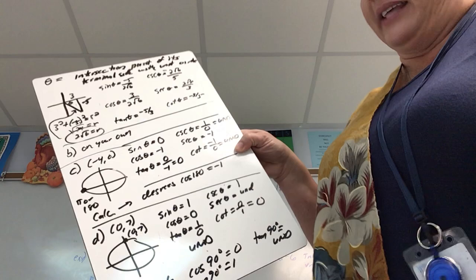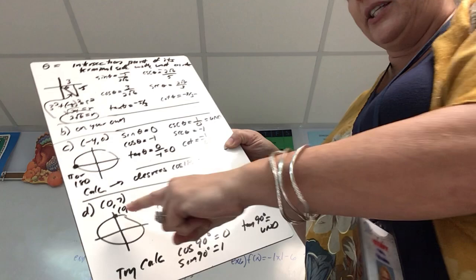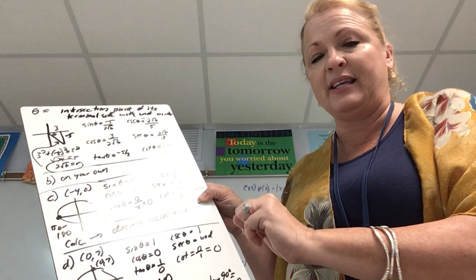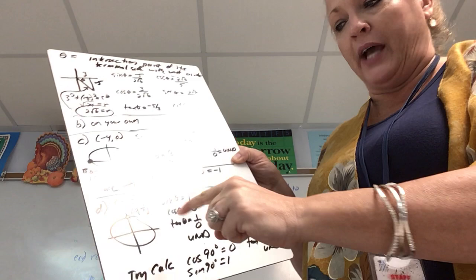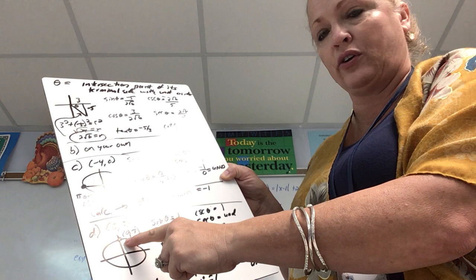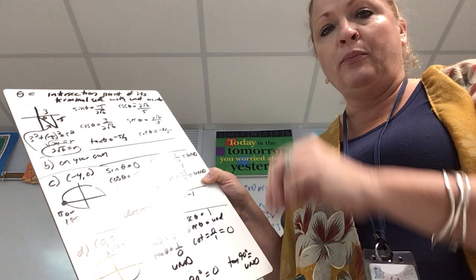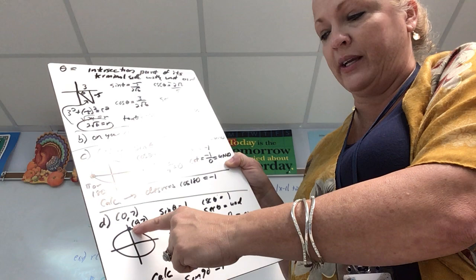For part d, set up six trig ratios where theta intersects the unit circle at (0, 7). Graph it to visualize: cosine is the x-coordinate (horizontal distance) and sine is the y-coordinate (vertical distance). Even though the point shows 7, this is a unit circle. Whether the point is (0, 7) or (0, 500), the sine of theta is 1, because the unit circle's top point is (0, 1). Cosecant, the reciprocal, is also 1. Put sine of 90° into your calculator — you get 1.